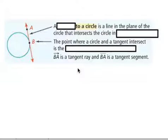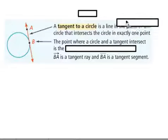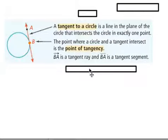A tangent to a circle is a line in the plane of the circle that intersects the circle in exactly one point. So that's right here at point B. The point where a circle and a tangent intersect is the point of tangency. B is our point of tangency.